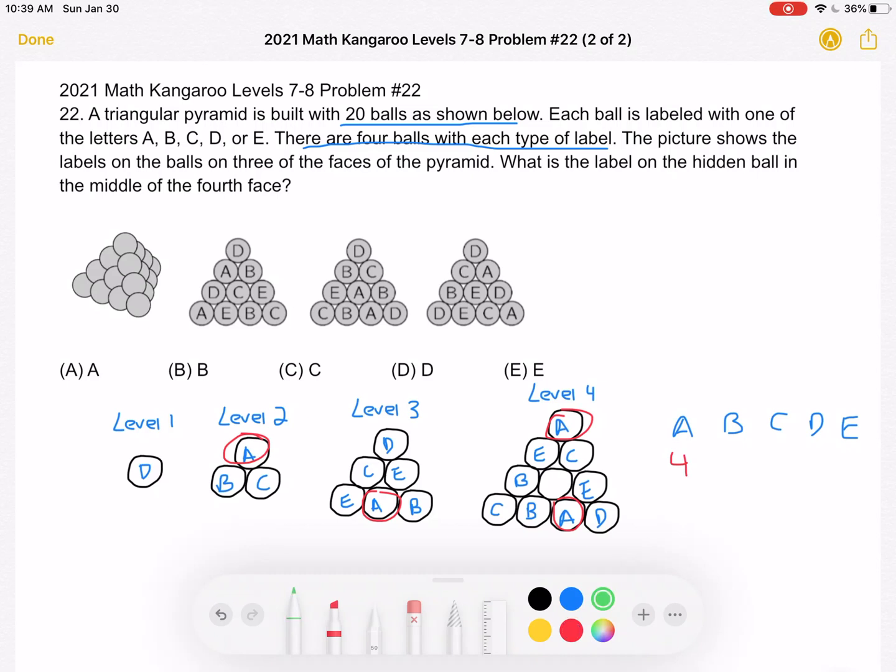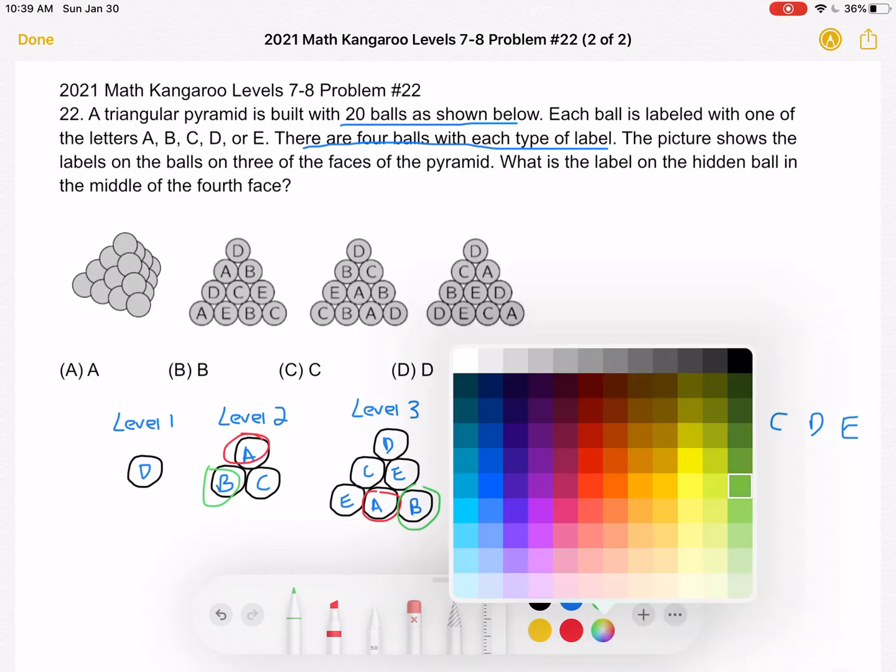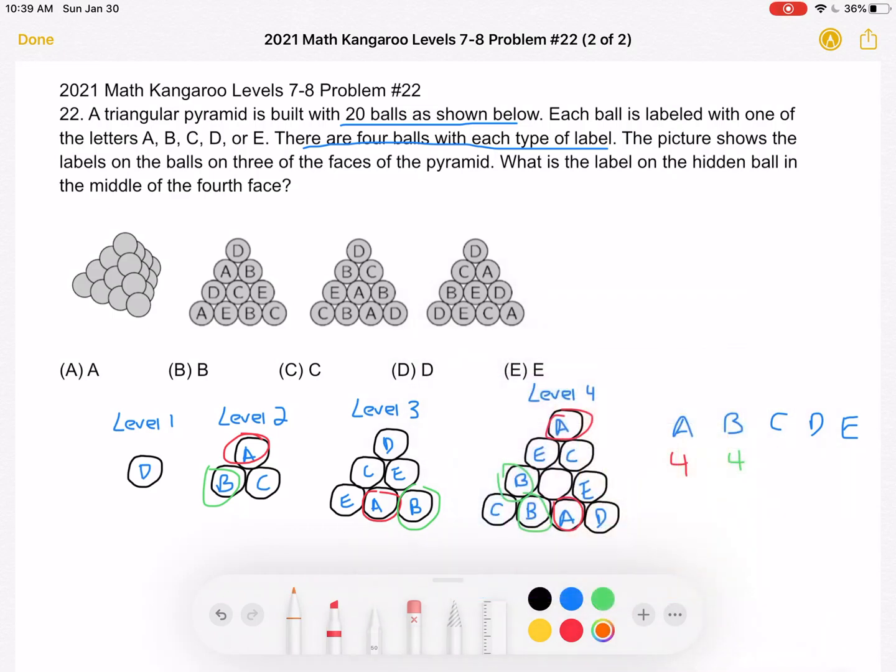Next let's look at B. We have one, two, three, four B's. Now let's look for C. One, two, three, four. We have all the C's.